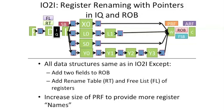Let's take a look at what we need to add to our pipeline. We have our in-order fetch, out-of-order issue, out-of-order writeback, and in-order commit processor that we had before. It had variable length pipes, a reorder buffer, a future store buffer, a scoreboard, and an instruction queue — all the structures we talked about last time.